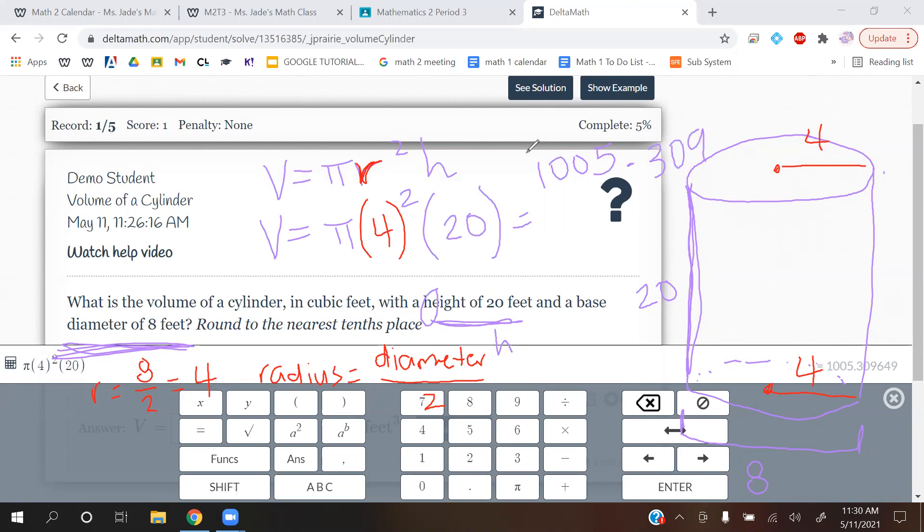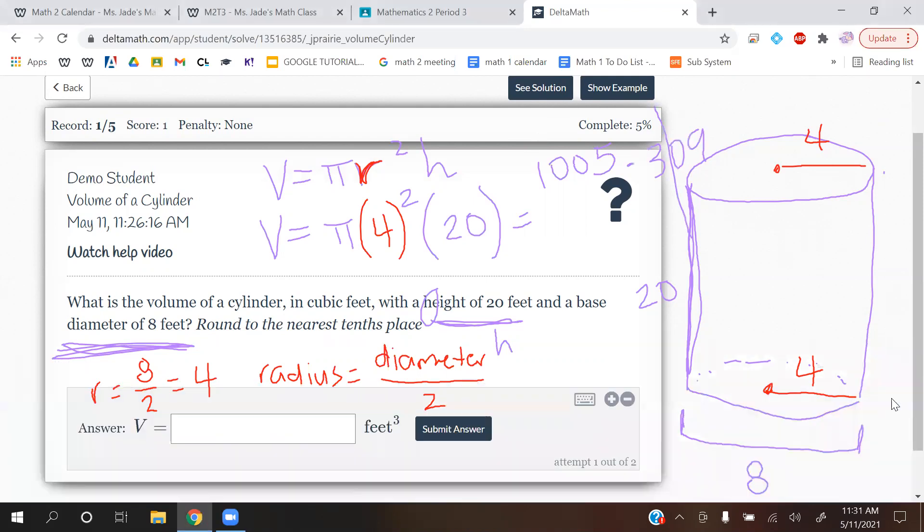I'm not going to write the rest because we are only going to round to the nearest tenth place, so we're going to pretty much cut it off after the 3. We just have to look at what's after that line that I just drew, which is a 0. So since 0 is a small number, we're going to keep the 3 as a 3. So I'm going to write or type in here 1005.3 because 0, you're not going to round this 3 up. Zero is a small number, so you're going to keep the 3 as a 3.